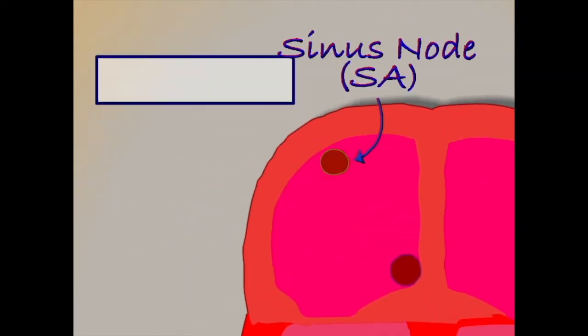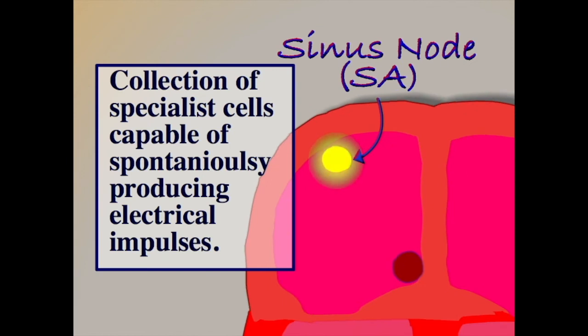The system starts with the sinus node. This collection of specialist cells sits in the right atrium and acts as the heart's natural pacemaker. These cells spontaneously produce electrical impulses at regular intervals, a little like the spark plugs of a car.